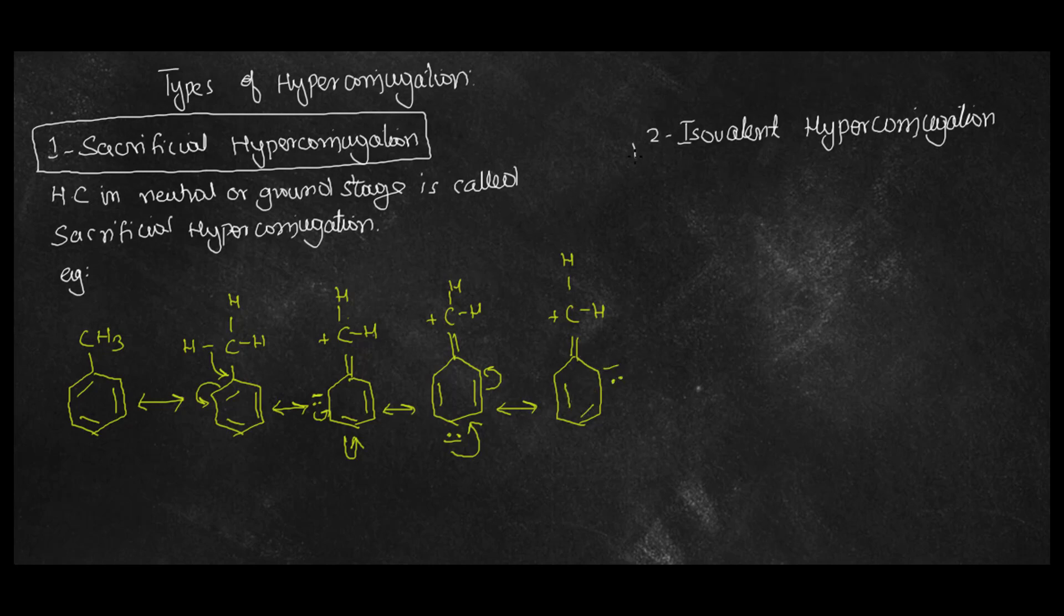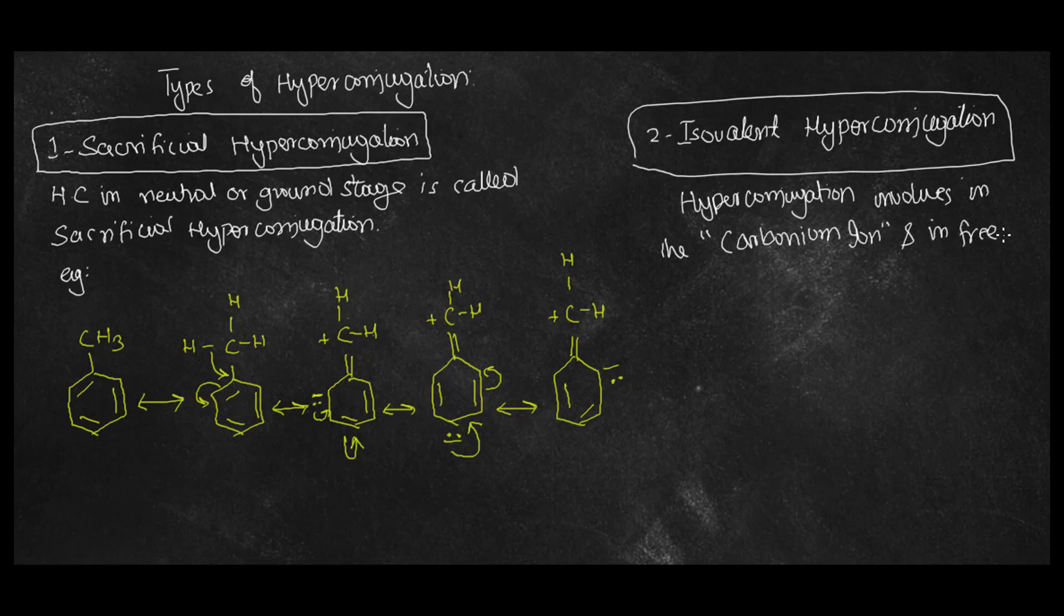Second one is the isovariant hyperconjugation. It is that type of hyperconjugation that involves carbonium ions and free radicals. So whenever there is a carbonium ion, carbonium ion is that carbon ion that contains positive charge.